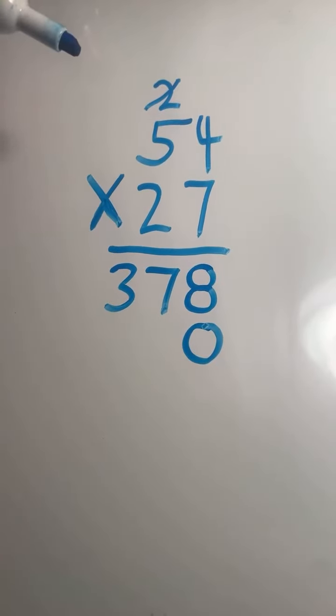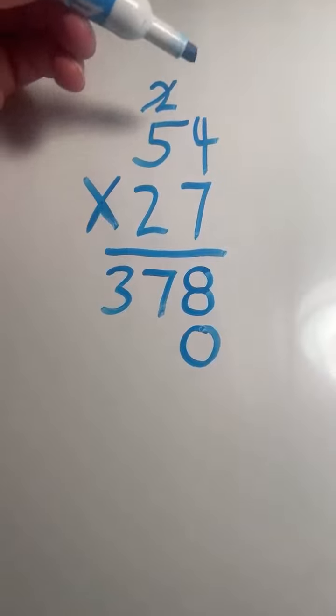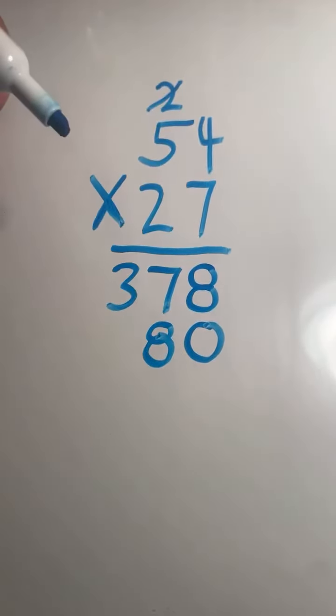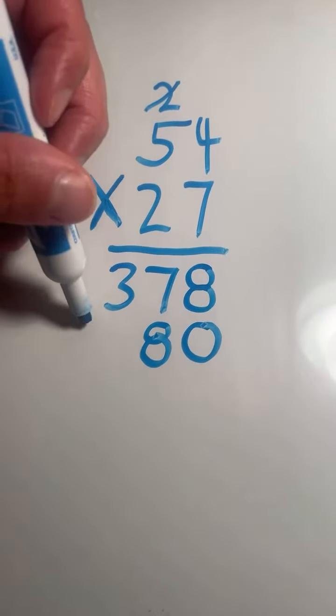Next, we're going to multiply the top 2 digits times the bottom digit in the tens place. So 4 times 2 equals 8. We do not need to regroup since our product is less than 10. 5 times 2 equals 10.